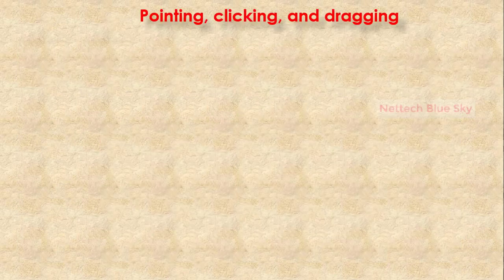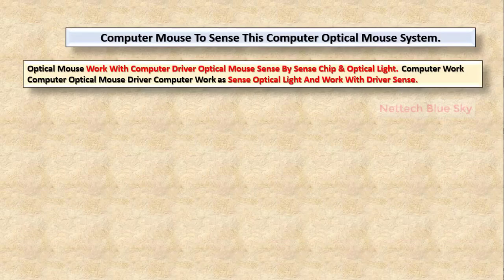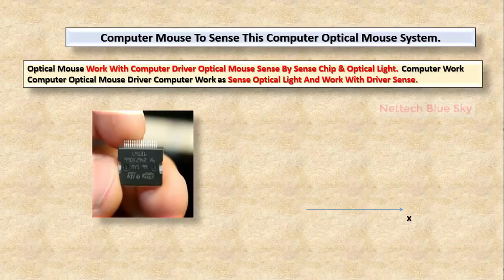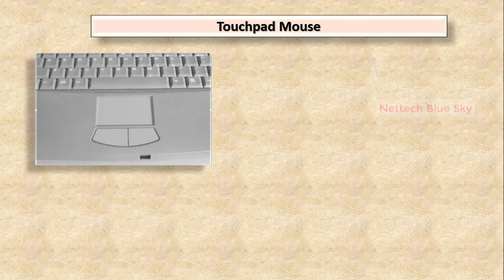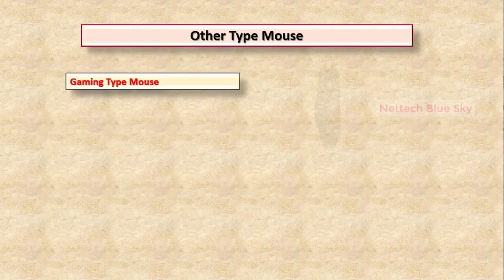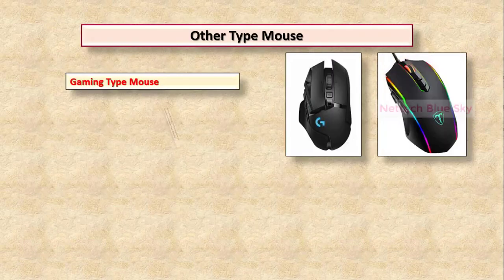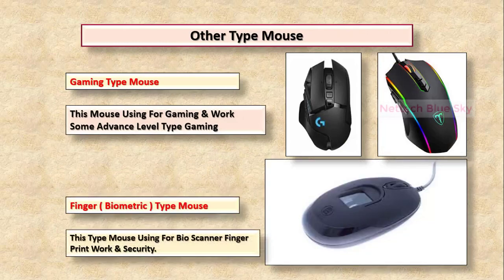Types of mouse — recognizing optical mouse. So optical mouse: one clicking, dragging, and change — how working these optical mouse. Touchpad type mouse and using sensor type mouse, and another system type of technology.